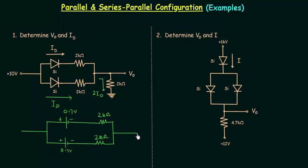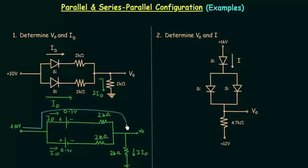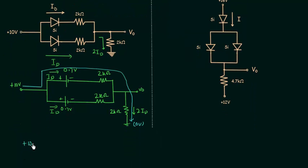We need to calculate V0, which is the voltage across this resistance of 2 kilo ohms. ID is the current flowing in the two branches and the current through this resistance is equal to twice ID. The potential at this point is plus 10V. Starting from 10V and moving towards 0 potential: 10V minus 0.7V minus 0.7V minus 2ID minus 4ID equals 0.